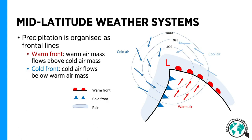Here is a classic illustration of a mid-latitude weather system. Air flows counterclockwise around a low pressure system in the northern hemisphere, bringing warm air from the subtropics northwards and cold air from the polar areas southwards. Where these warm and cold air masses meet, frontal zones are formed, where warm air rises above cold air and precipitation is formed. These mid-latitude weather systems are continuously formed in the mid-latitudes, affecting largely the daily and weekly weather in these areas.